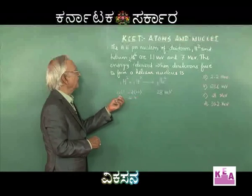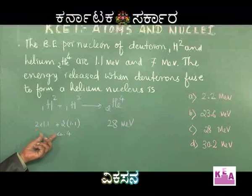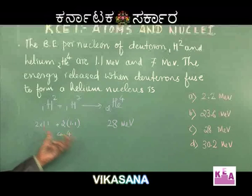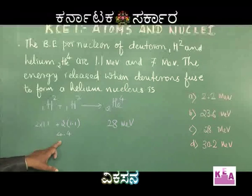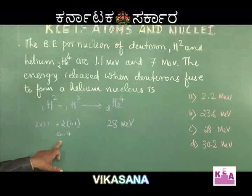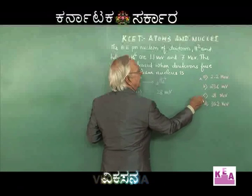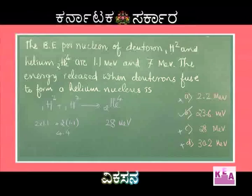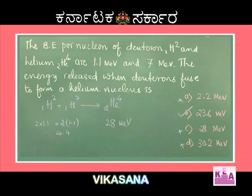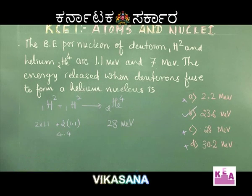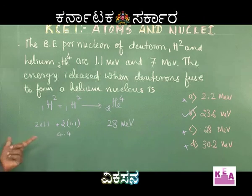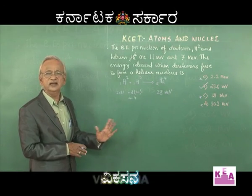The energy released is the difference between binding energy of the product and the reactants: 28 − 4.4 = 23.6 MeV. By elimination of options (not 2.2, not 28, not 30), the correct choice is 23.6 MeV.